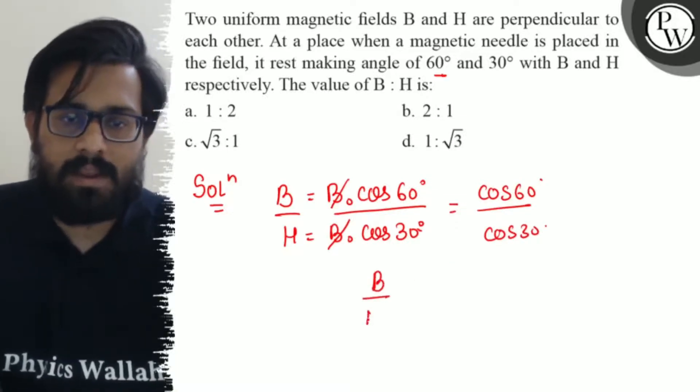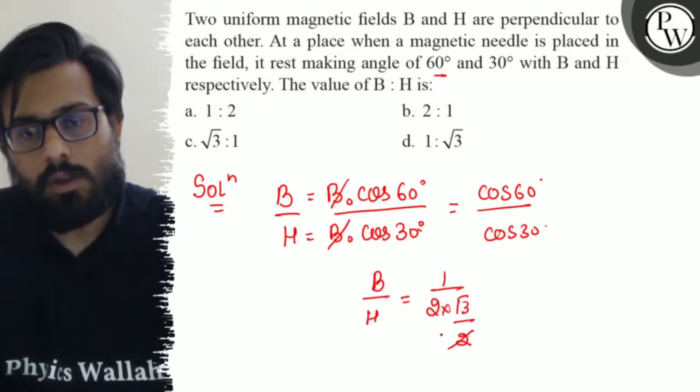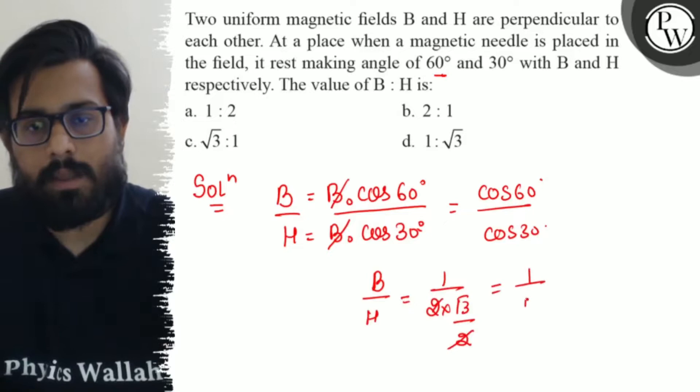From here the ratio of B and H comes to be cos 60 is 1/2 and cos 30 is √3/2. 2 se 2 cancel ho jata hai and it comes to be 1/√3.